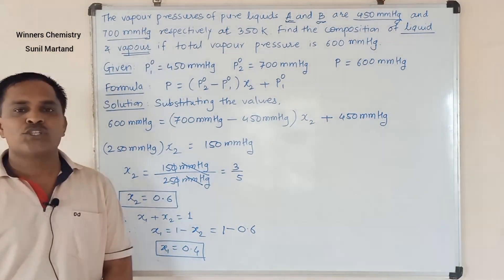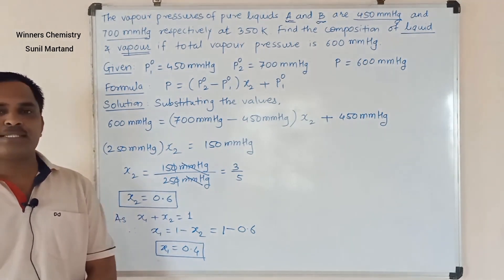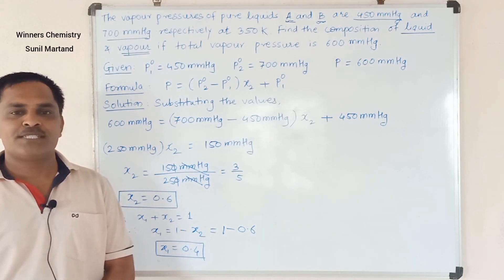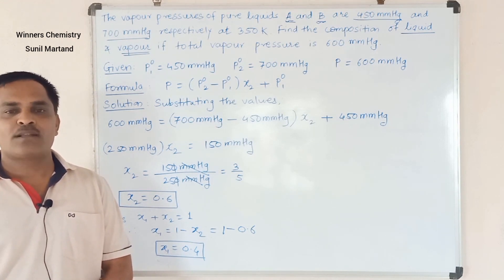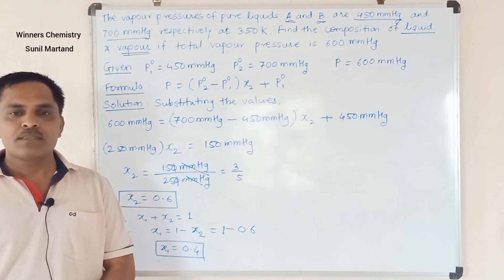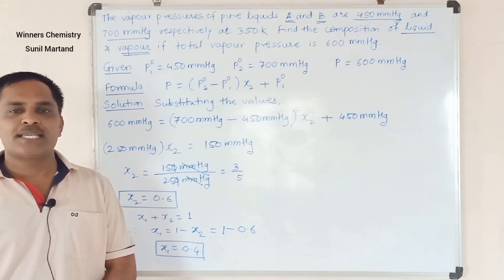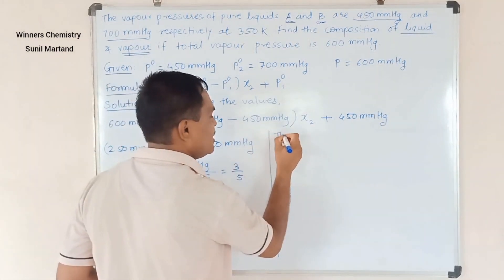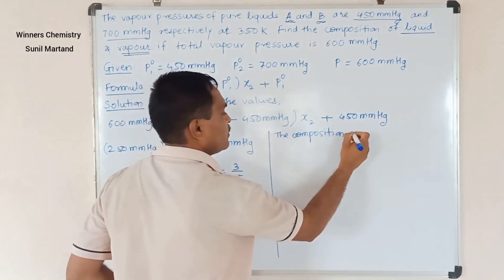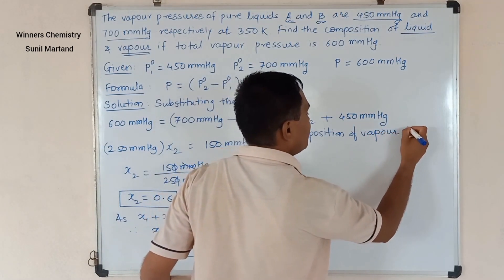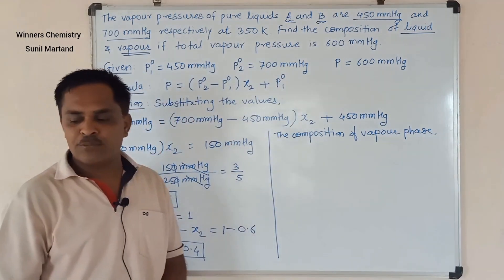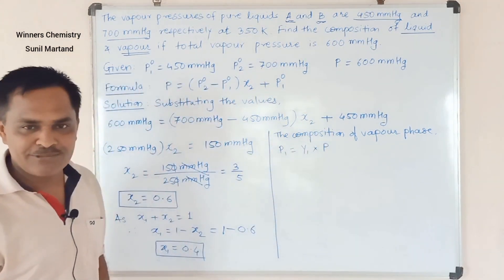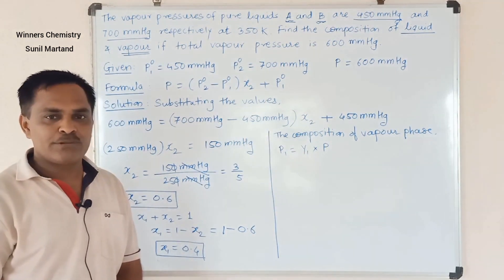These answers x1 and x2 represent only the composition of the liquid state. We still need to calculate the composition of the vapour phase. The formula for vapour phase composition uses: P1 equals y1 into P for component 1, and P2 equals y2 into P for component 2.